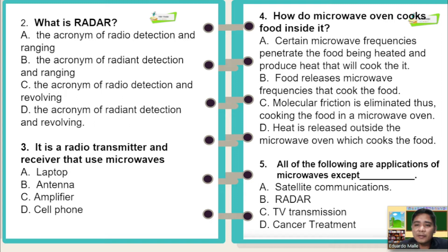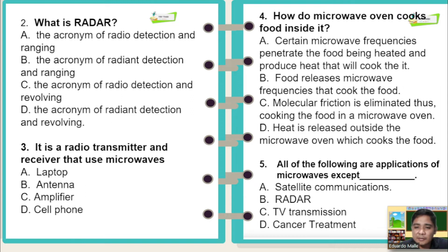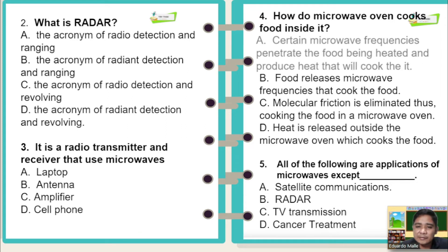Number four: how does a microwave oven cook food inside it? A: certain microwave frequencies penetrate the food being heated and produce heat that will cook the food inside it. B: food releases microwave frequencies that cook the food. C: molecular friction is eliminated, thus cooking the food in a microwave oven. D: heat is released outside the microwave oven which cooks the food. The correct answer is letter A.